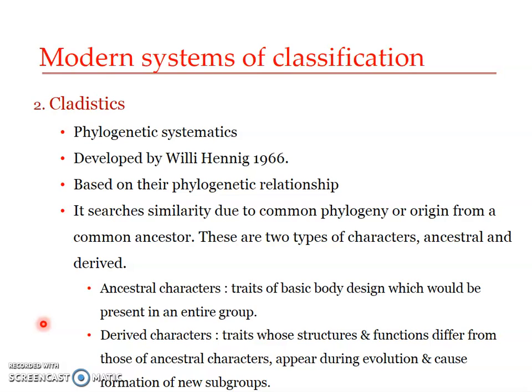During classification we search for similarity due to common phylogeny — that is, if two or more species or two or more taxa have evolved from the same ancestor, they may obviously have similar characters. So we look for similarities, and these similarities may be due to common phylogeny, or origin from the common ancestor.